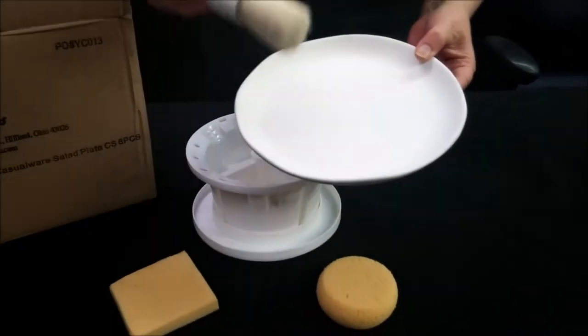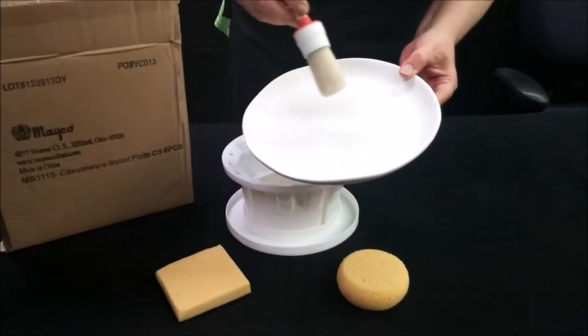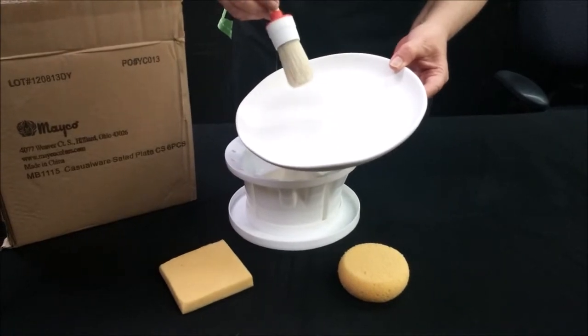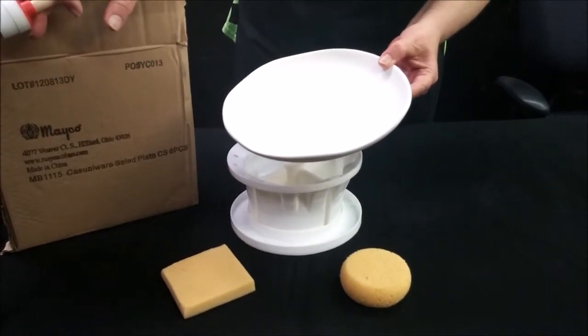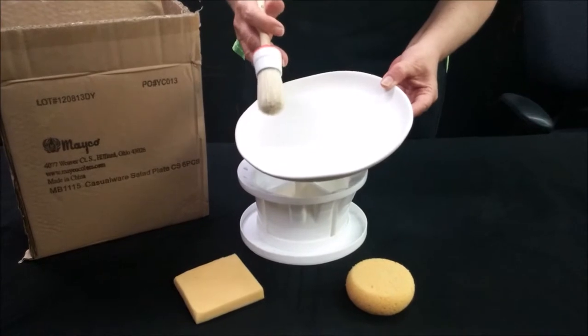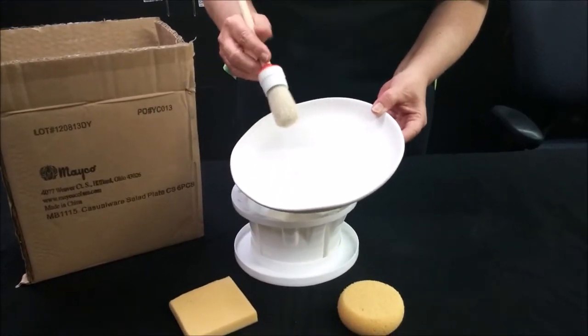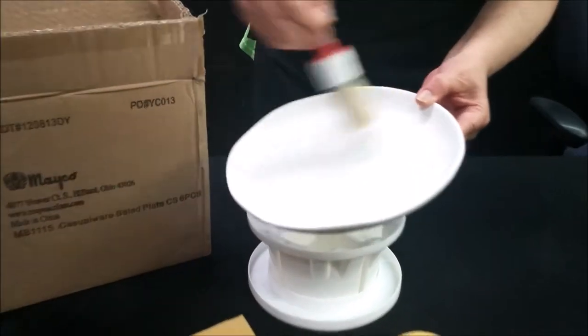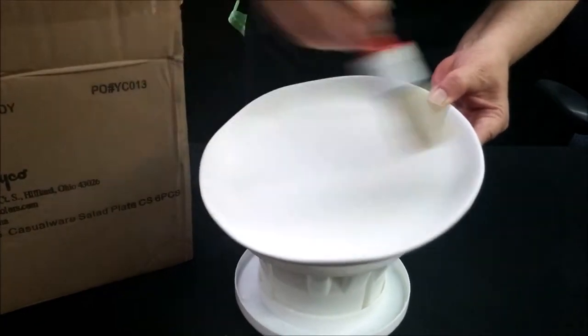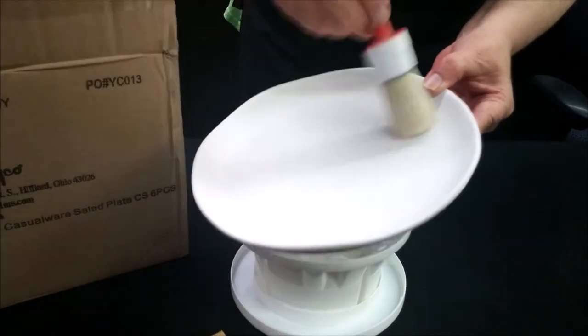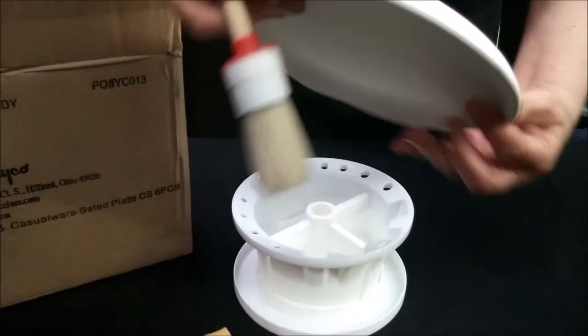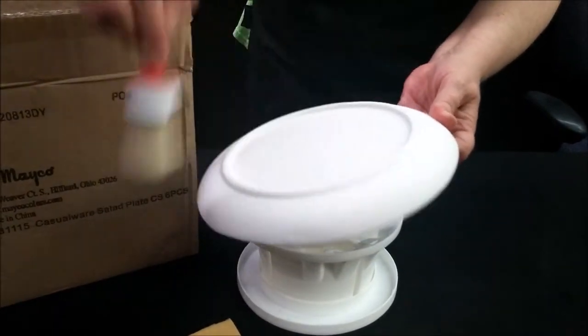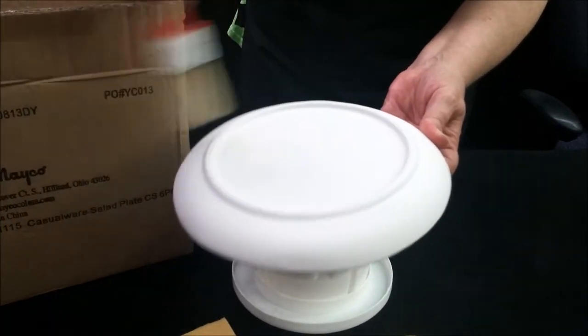The next thing you want to do is using the duster brush, dust off any dust, dirt, or bisque residue, because whether it just came out of the box or it's been sitting on your shelf for a couple of months, it's going to have one of those on it. See what comes off? You want to get that off because if you don't take it off, then that first coat of glaze is going to be very gritty.